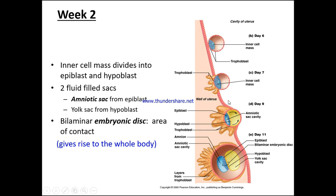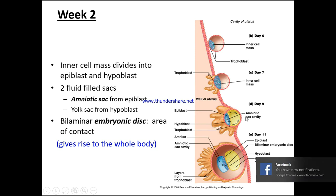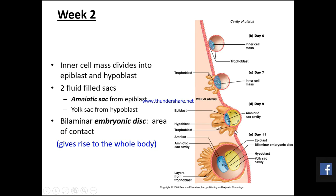By day nine, there is further invagination of the trophoblast, and we now have the additional hypoblast and epiblast region along with the amniotic sac cavity. Continuing to day 11, we can see the epiblast, the bilaminar embryonic disc, the hypoblast, and the yolk sac cavity — with an almost complete transference through into the wall of the uterus at this point.